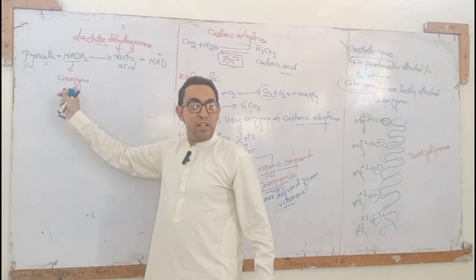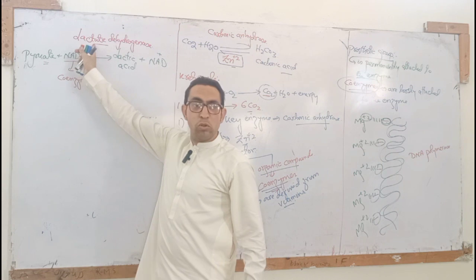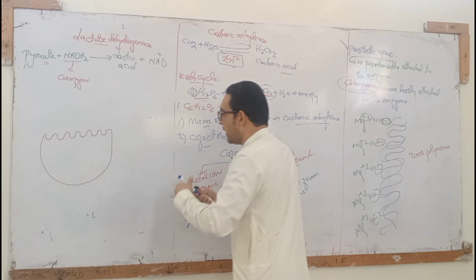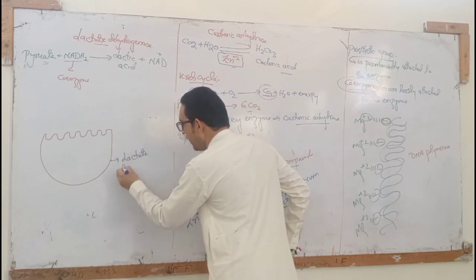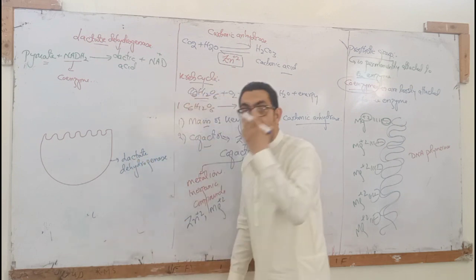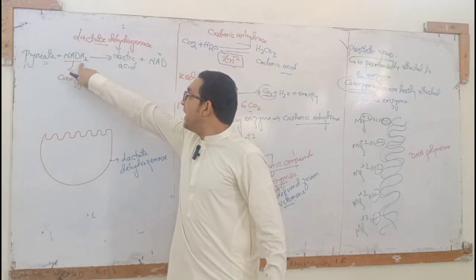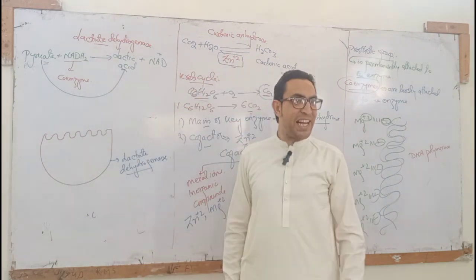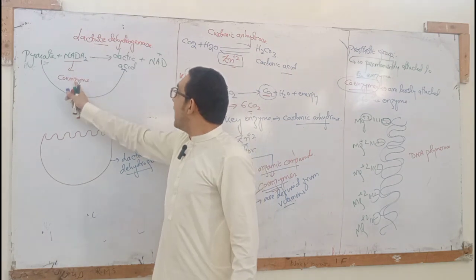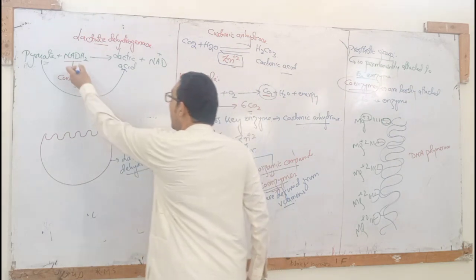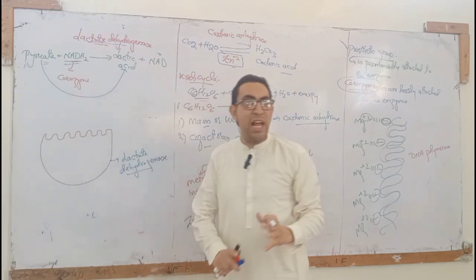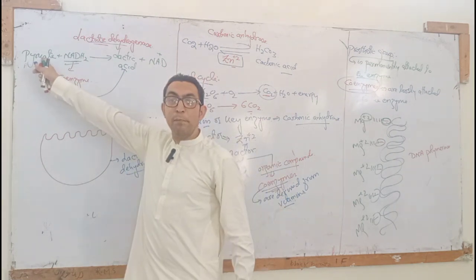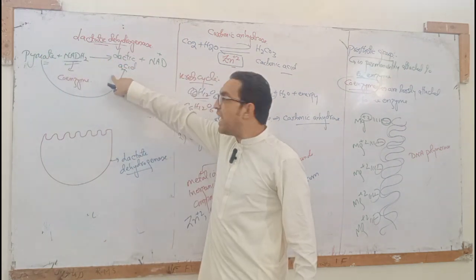In this reaction, NADH₂ is the coenzyme for lactate dehydrogenase. Lactate dehydrogenase is the main enzyme. NADH₂ is the coenzyme that helps lactate dehydrogenase. NADH₂ transfers hydrogen and electrons. It transfers hydrogen from NADH₂ to pyruvate, converting pyruvate to lactic acid. When hydrogen is transferred, NADH₂ becomes NAD⁺.